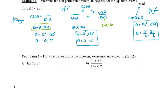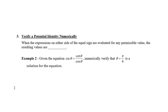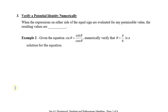Next, I want to show you how to verify a potential identity numerically. When the expressions on either side of the equal sign are evaluated for any permissible value, the resulting values should be equal. For example, given cosecant theta equals cotangent theta divided by cosine theta, we'll verify this is true by plugging in theta equals pi over 6. So cosecant of pi over 6 equals cotangent of pi over 6 divided by cosine of pi over 6.